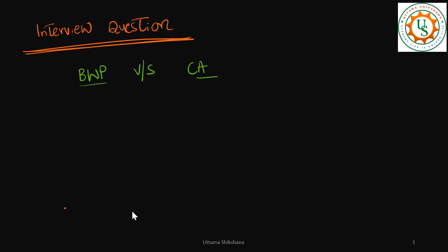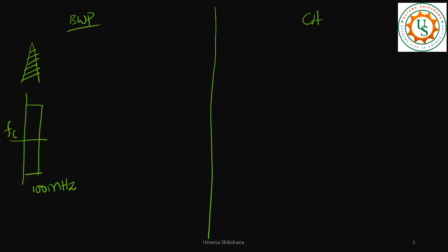Hey guys, welcome back. In this video I want to talk about what needs to be a question: BWP versus carrier aggregation — bandwidth part versus carrier aggregation. I have made the partition of bandwidth part and carrier aggregation here. Let me consider a gNB. It operates at a wide bandwidth, let's say 100 MHz. This 100 MHz would be transmitted using only one carrier frequency FC, and this 100 MHz is occupied continuously on a single band.